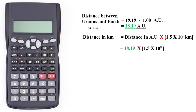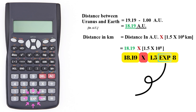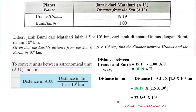Now, with the help of the calculator, press 18.19 x 1.5 exponent 8. The answer is 27.285 x 10 to the power of 8.